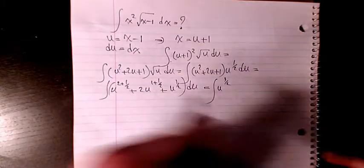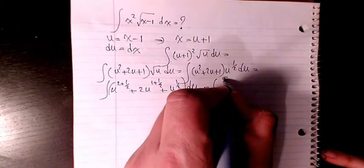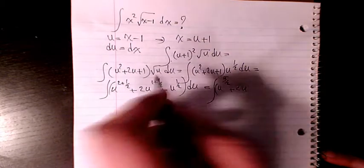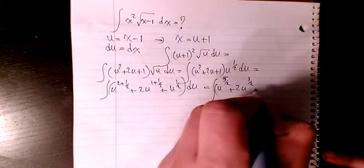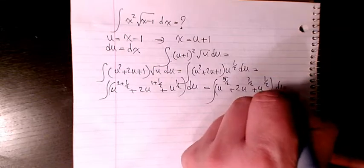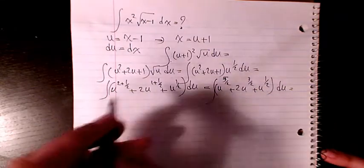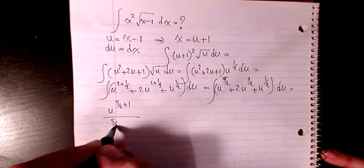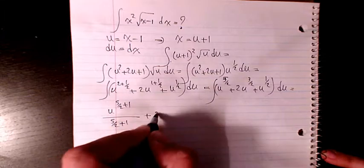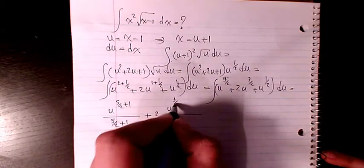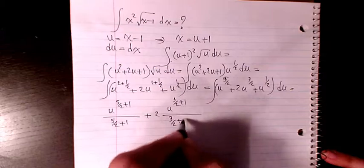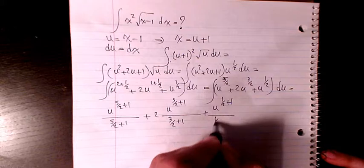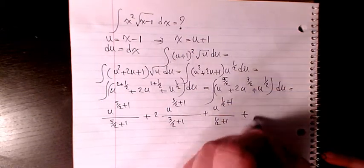Then I will have u to the power of 5 over 2, and then 2u to the power of 3 over 2, plus u to the power 1 over 2, du. So it will be u to the power of 5 over 2 plus 1 divided by 5 over 2 plus 1, plus 2u to the power of 3 over 2 plus 1 divided by 3 over 2 plus 1, plus u to the power 1 over 2 plus 1 divided by 1 over 2 plus 1, plus C.